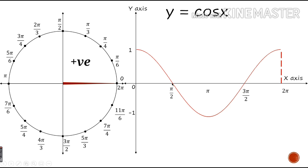In the second quadrant, pi by 2 to pi, values decrease — cos of pi is minus 1. In the third quadrant, pi to 3 pi by 2, values increase but all values are negative. In the fourth quadrant, values increase again and are all positive, going from 0 to 1. Similarly, we can draw graphs for the other trigonometric ratios.